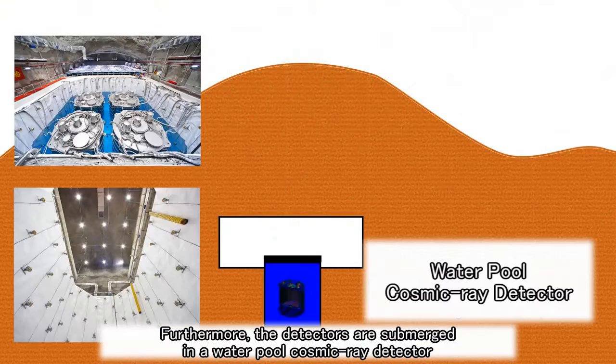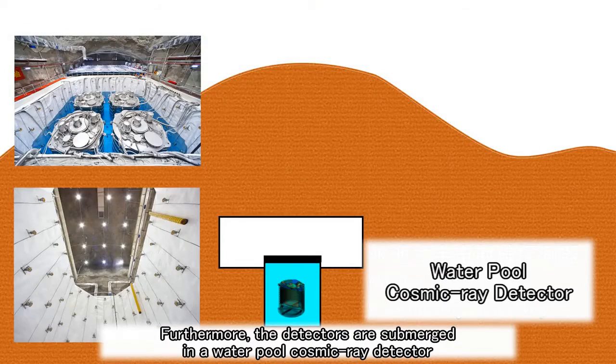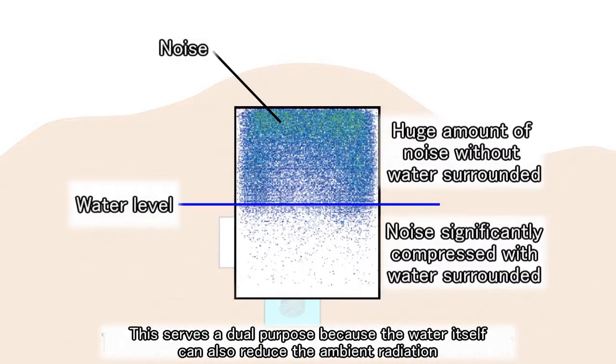Furthermore, the detectors are submerged in a water pool cosmic ray detector. This serves a dual purpose because the water itself can also reduce the ambient radiation.